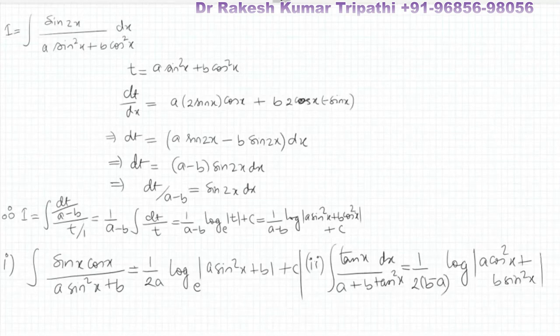And its answer will be 1 upon 2 times b minus a log of mod of a cos square x plus b sin square x base e plus integral constant c. So you can integrate these two integrals yourself.